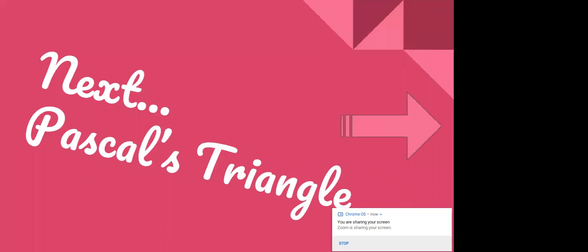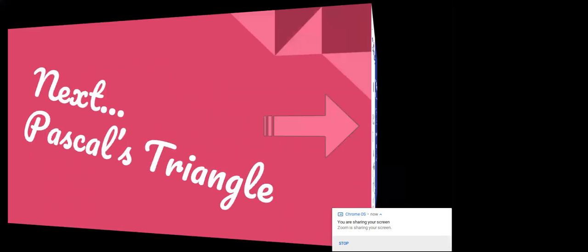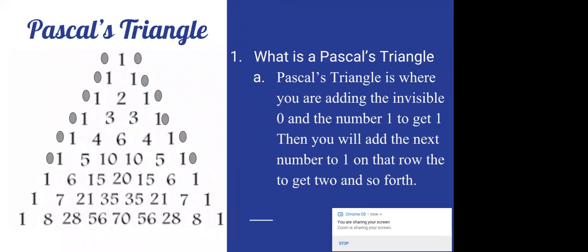Next we're going to talk about Pascal's Triangle. Pascal's Triangle basically is you're adding. So you do 0 and 1. 0 plus 1 gives you 1. 1 plus 1 equals 2. 1 plus 0 gives you 1. So the numbers that you're adding together will give you the next level.